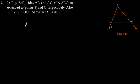Exercise 7.4, question number 2. In figure 7.48, sides AB and AC of triangle ABC are extended to points P and Q respectively. Also, angle PBC is less than angle QCB. We need to show that AC is greater than AB.